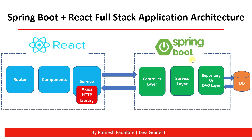The Service layer holds all the business logic — we keep all our business logic in the Service layer. Apart from business logic, if you have any calls to a third-party HTTP API, you can also keep that logic in the Service layer. The Repository or DAO layer is where we keep database-related logic or persistence logic, and it is responsible for talking with the database.